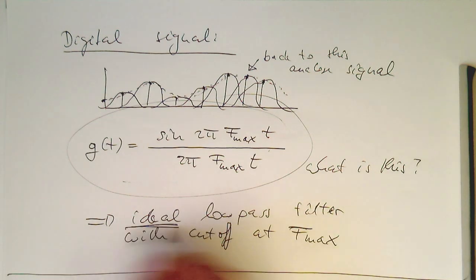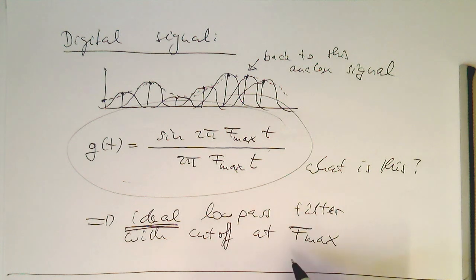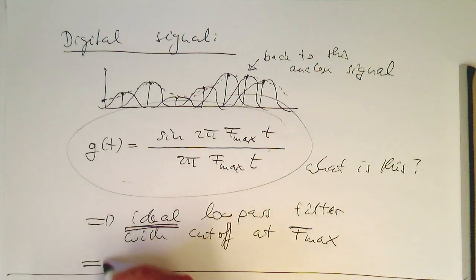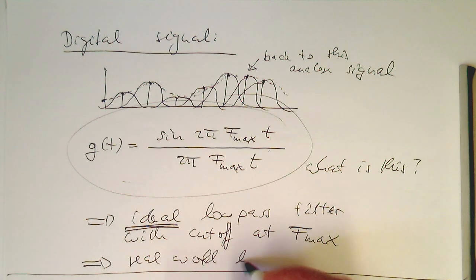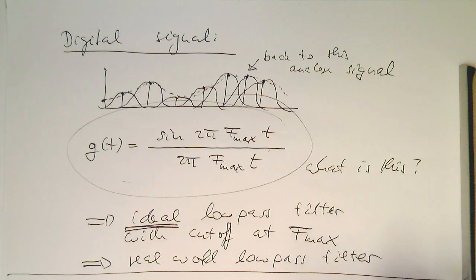The problem is with ideal low pass filters, ideal low pass filters don't exist in the real world. But we can always generate an approximation of these low pass filters, just by creating a real world low pass filter. This is usually done, that we have our AD converter and then a low pass filter, just at the output.